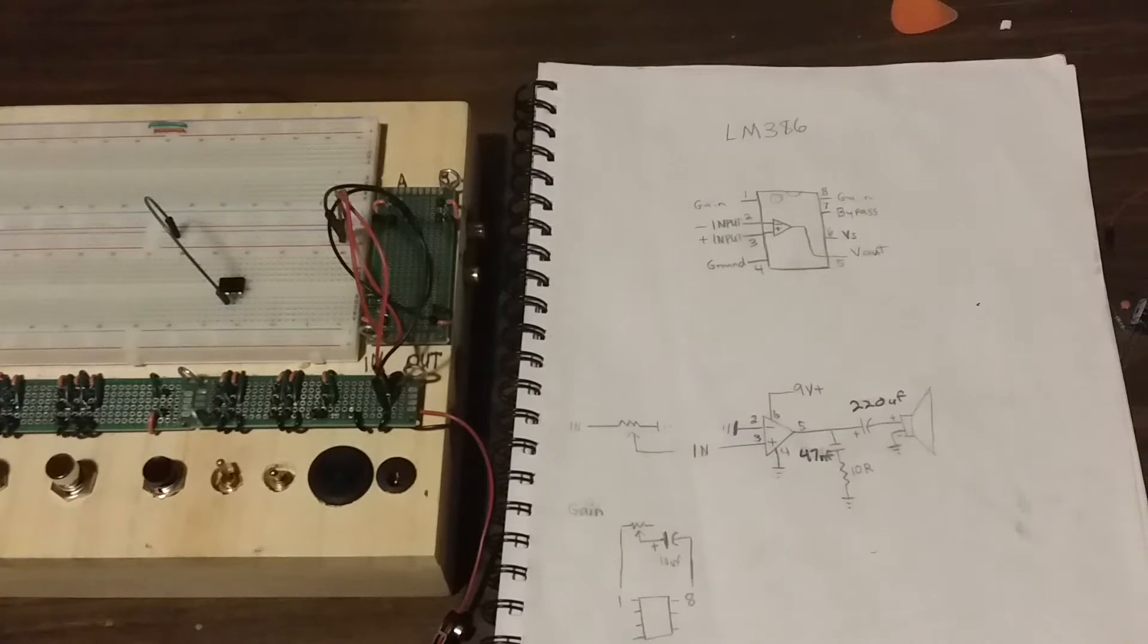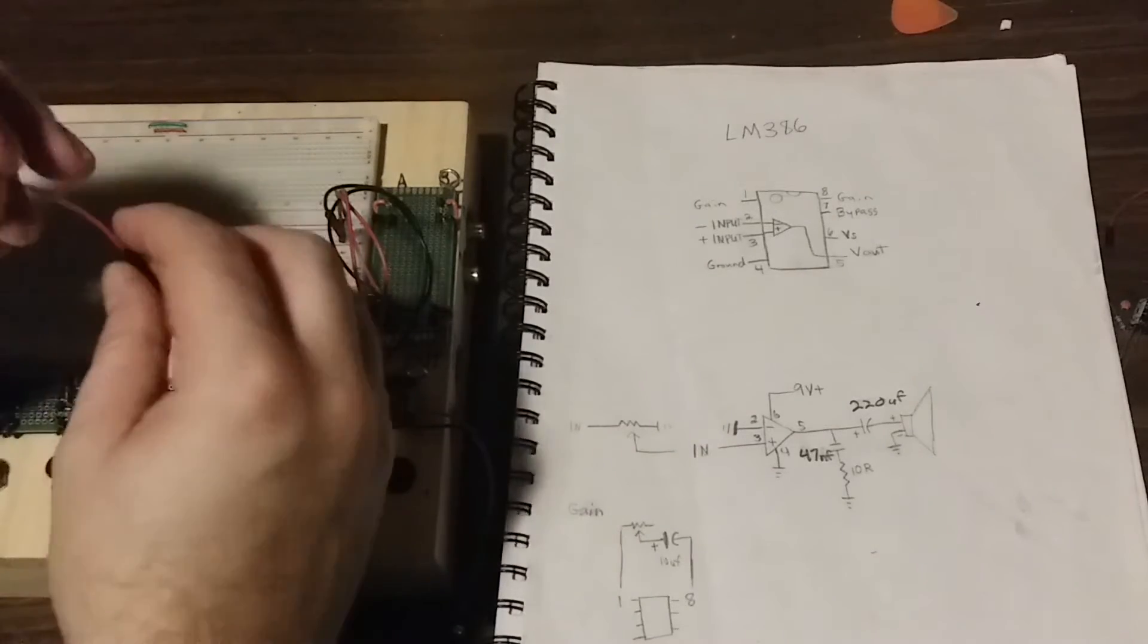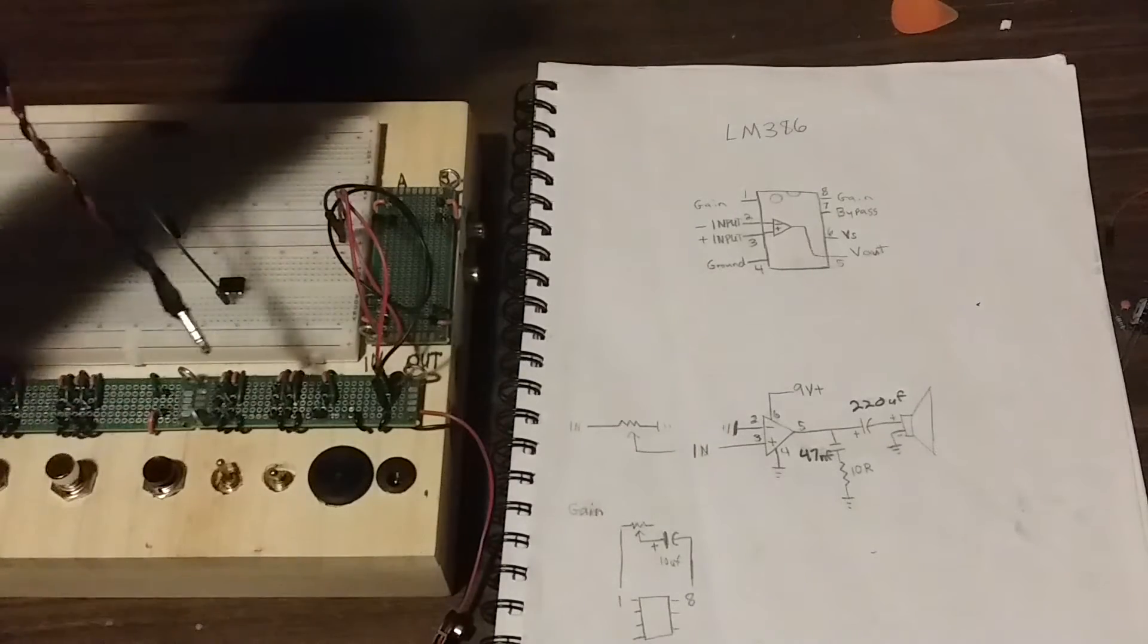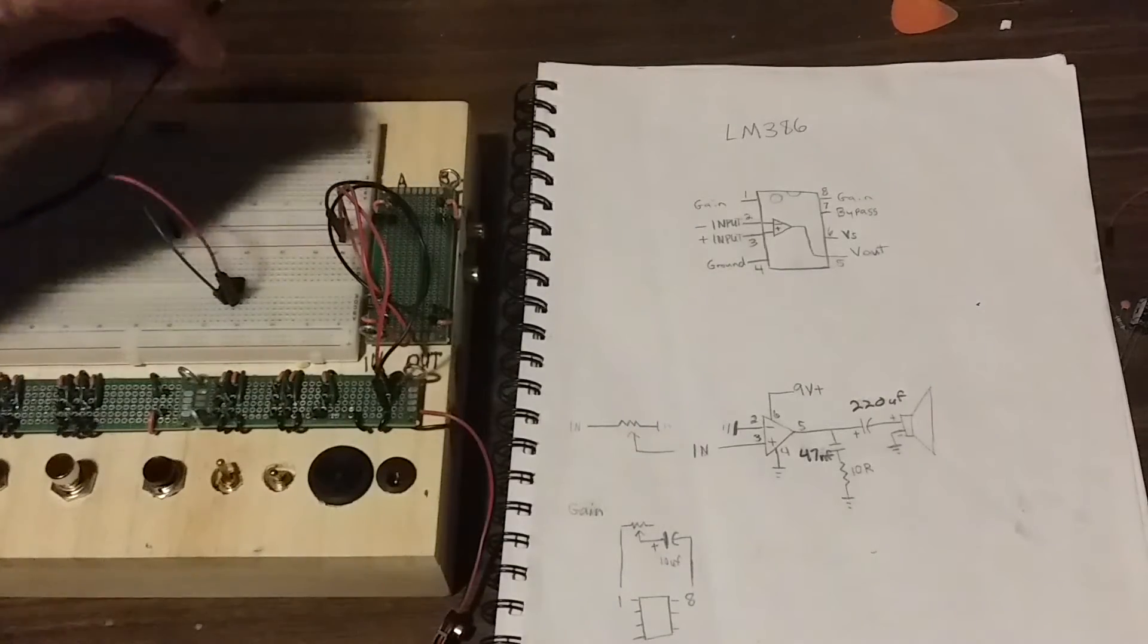Next, we can see that pin number 3 is the input. So we'll plug the positive from our headphone jack cable into pin number 3. And the negative we'll plug into ground.